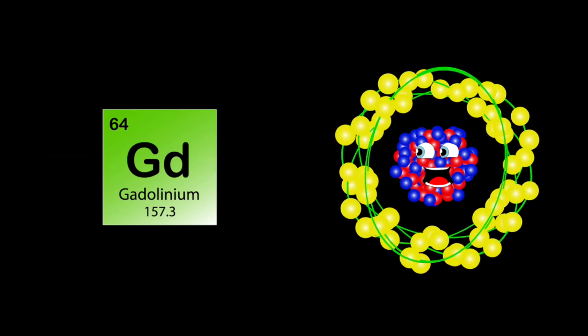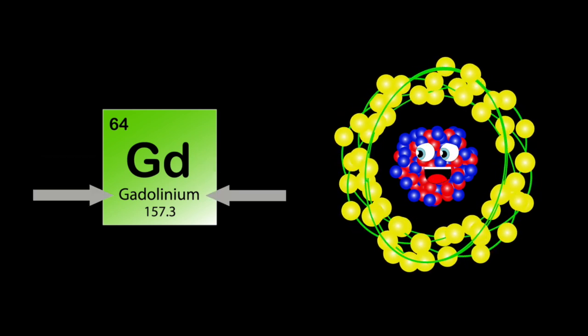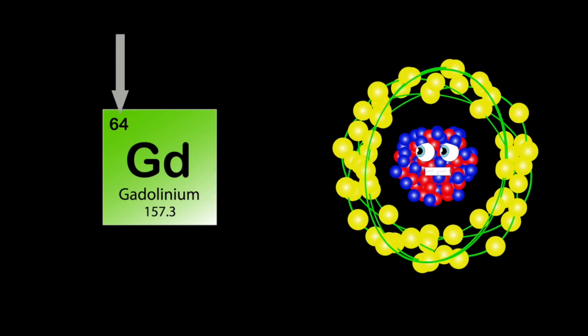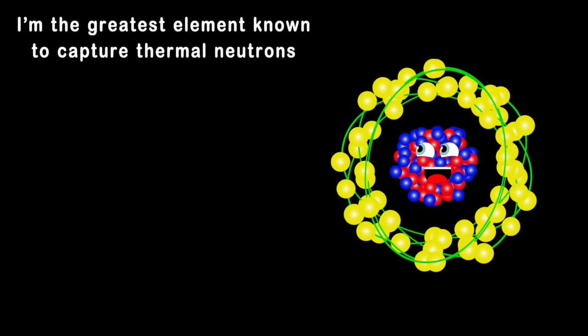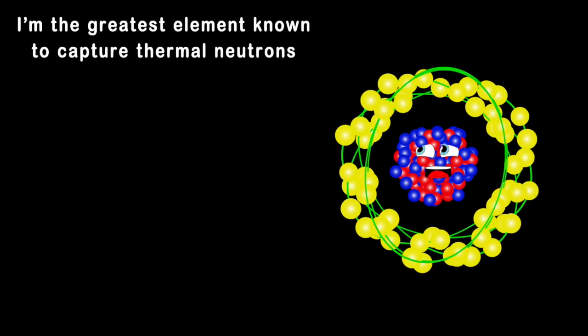GD is my symbol, I am gadolinium, my atomic number's 64, my atomic mass is 157. I'm the greatest element known to capture thermal neutrons, and in nuclear reactors I'm used as control rods.